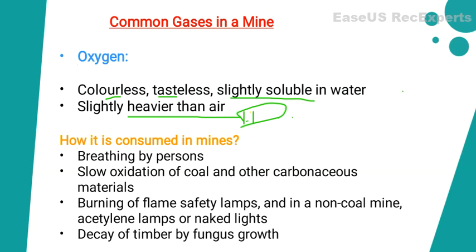Now coming to how oxygen is consumed in a mine. The first reason is breathing by persons — if a worker is working in a mine, he will inhale oxygen and it leads to the reduction of oxygen level in the atmosphere. Next is slow oxidation of coal and other carbonaceous material, which also leads to reduction of oxygen concentration. Another reason is burning of flame safety lamps — in coal mines we use flame safety lamps, and burning them consumes oxygen, reducing the oxygen level.